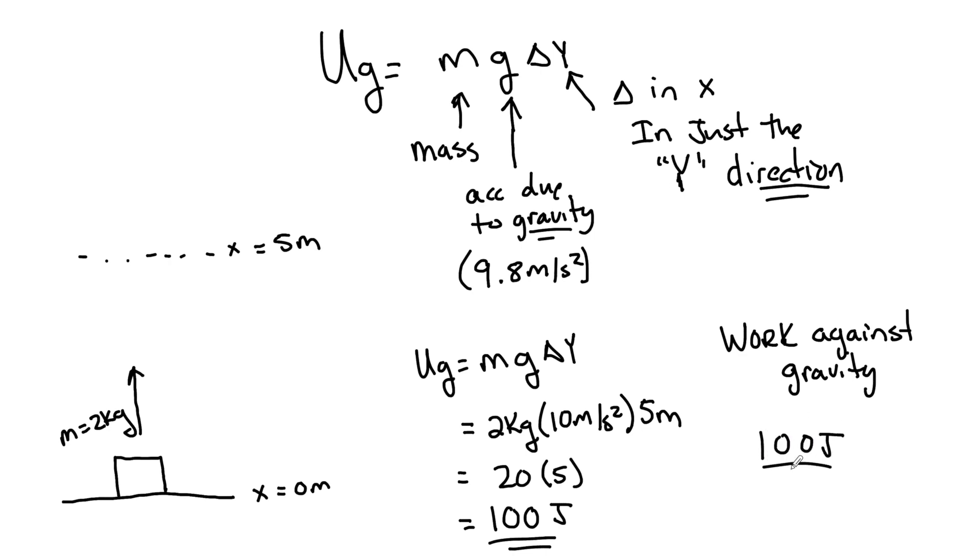So there's different ways that we can word this. We can say up here, this thing has a U_G equal to 100 joules. Or we can say the work done, the change in energy from here to here, was equal to 100 joules. And guys, something really important to understand is that this is independent of the path that we take.